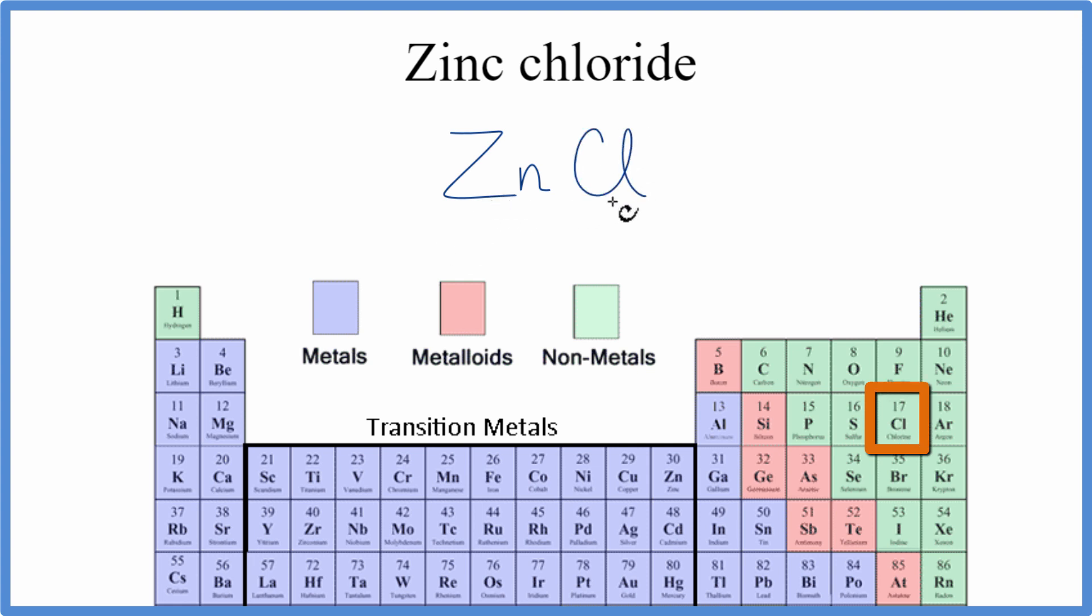Zinc is a metal and chlorine is a nonmetal, so with a metal and a nonmetal we have an ionic compound, and we need to consider the ionic charges when we write the formula.